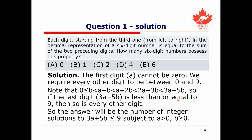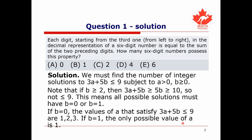The answer to our question is exactly the number of integer solutions to 3A + 5B ≤ 9, subject to A > 0 and B ≥ 0. Notice that if B were greater than or equal to 2, then 5B would already be at least 10, so there would be no valid solutions. This tells us B must be either 0 or 1.